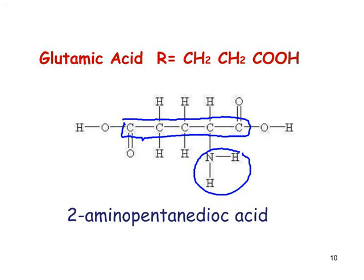To name glutamic acid correctly, we take the longest chain that includes both carboxyl groups, which gives us a five-carbon chain. Numbering from one carboxyl group as carbon 1, we go 1, 2, 3, 4, 5. Without the amino group, that would be pentanedioic acid. Taking account of the amino group on carbon 2, the full IUPAC name is 2-aminopentanedioic acid.